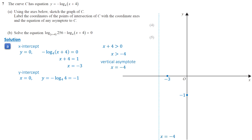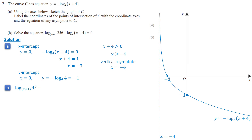The function is decreasing and the graph never touches x equals negative 4. It passes through negative 3 on the x-axis and negative 1 on the y-axis. Next, in part b, 256 is 4 raised to the power 4. Using the power rule, 4 times log base (x+4) of 4 can be written as 4 over log base 4 of (x+4).